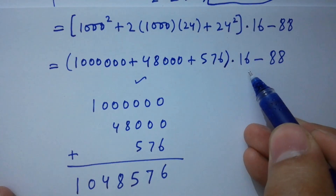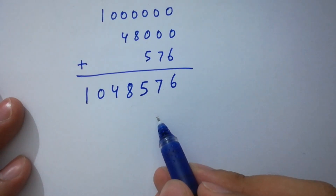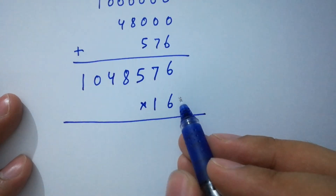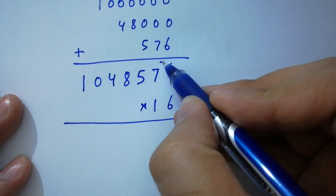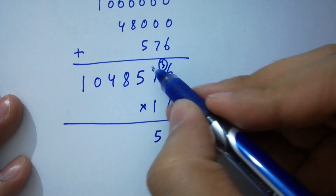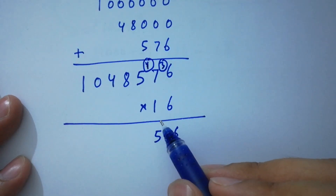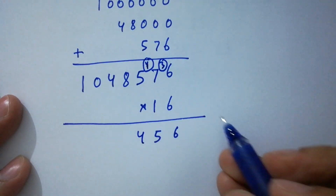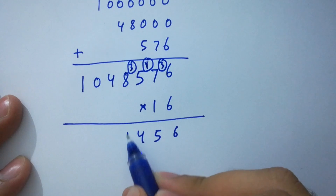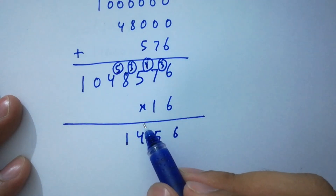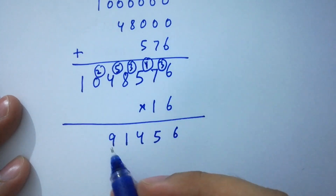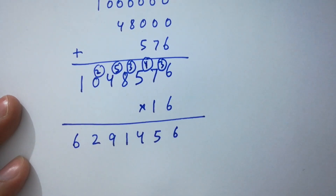Multiplying 1,048,576 by 6 (the units digit of 16): 6 times 6 is 36, write 6 carry 3. 6 times 7 is 42, plus 3 is 45, write 5 carry 4. 6 times 5 is 30, plus 4 is 34, write 4 carry 3. 6 times 8 is 48, plus 3 is 51, write 1 carry 5. 6 times 4 is 24, plus 5 is 29, write 9 carry 2. 6 times 0 is 0, plus 2 is 2. 6 times 1 is 6.